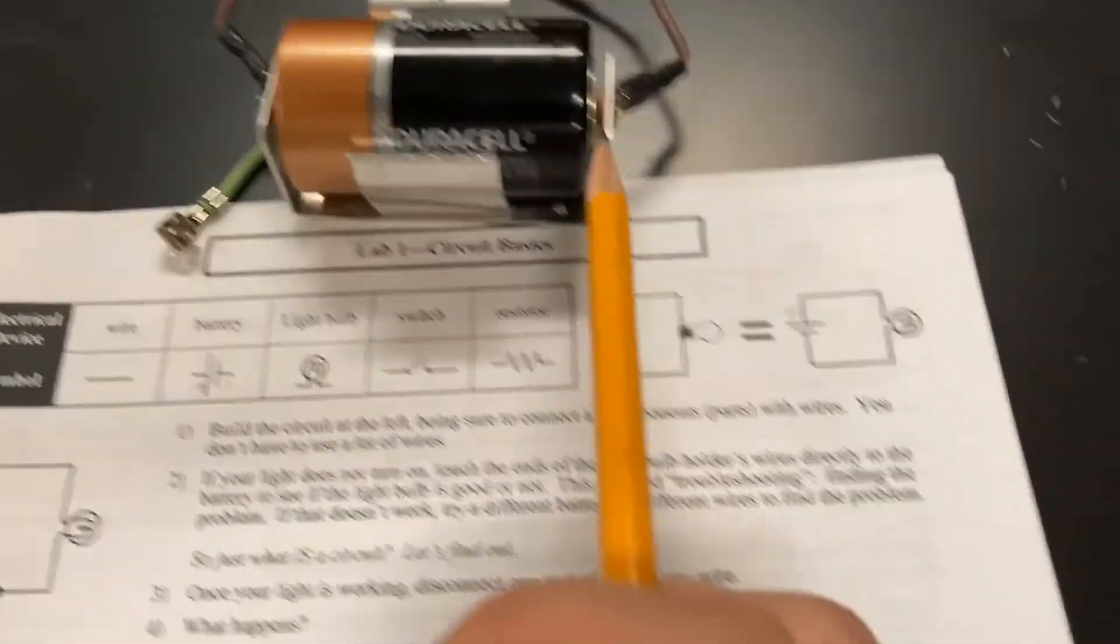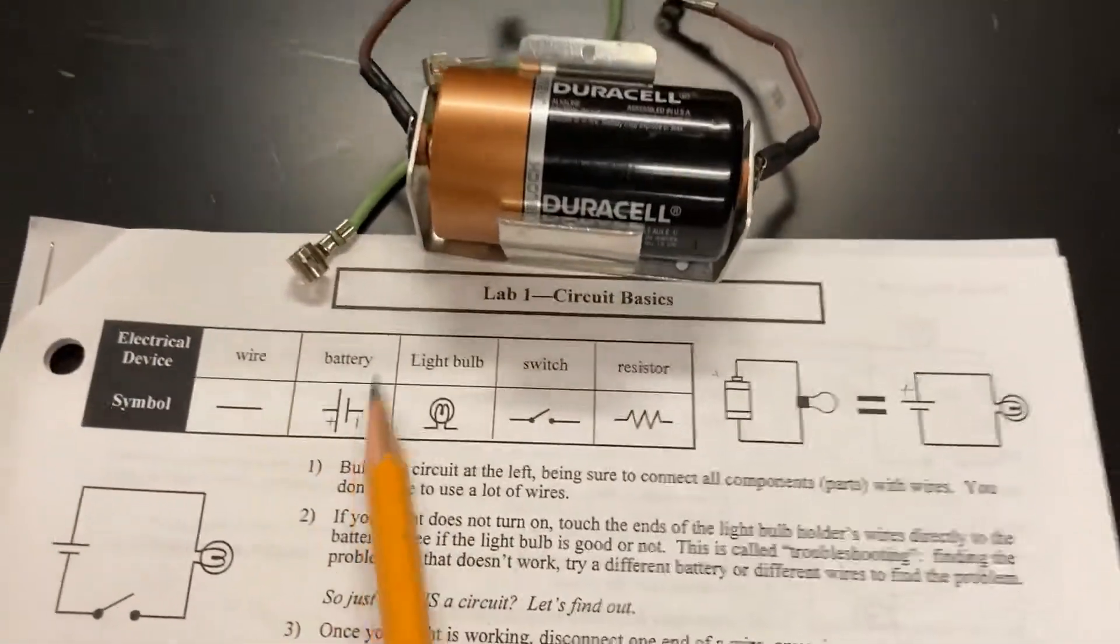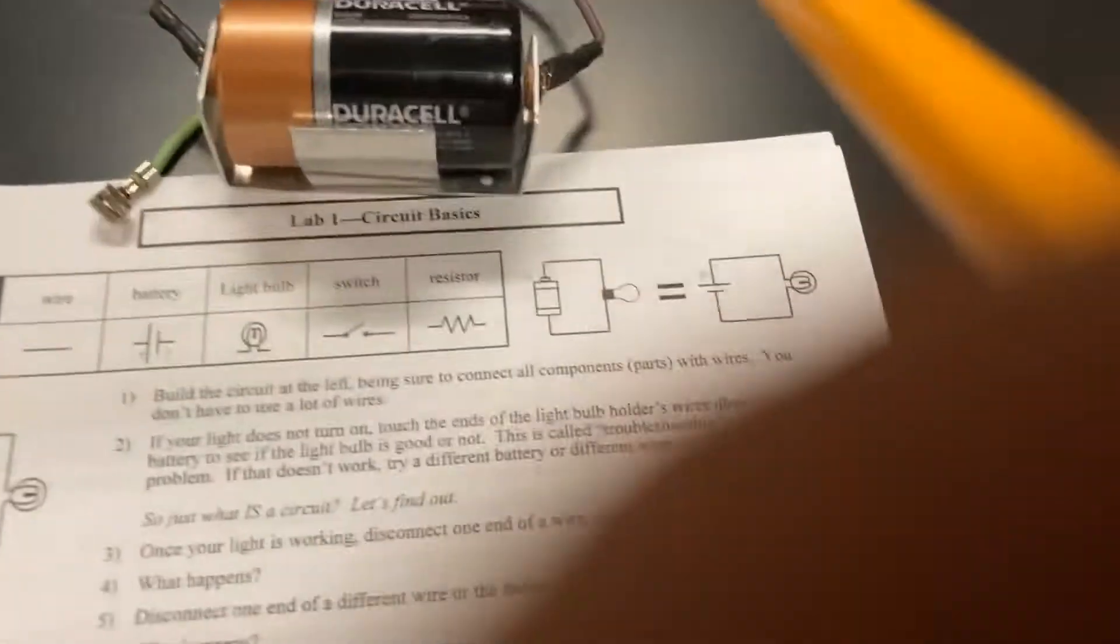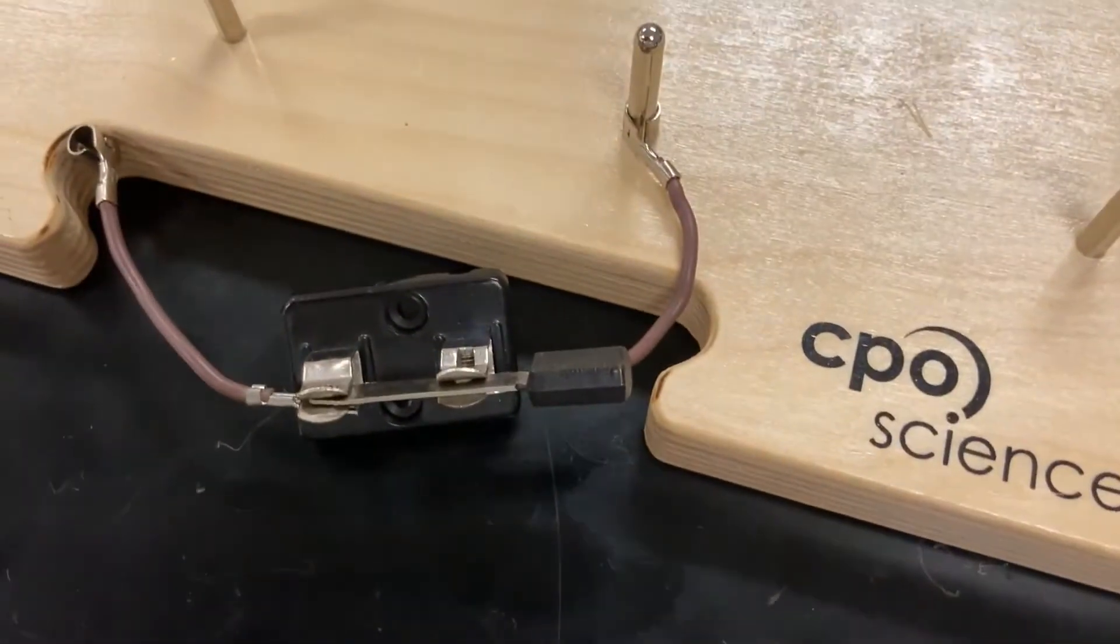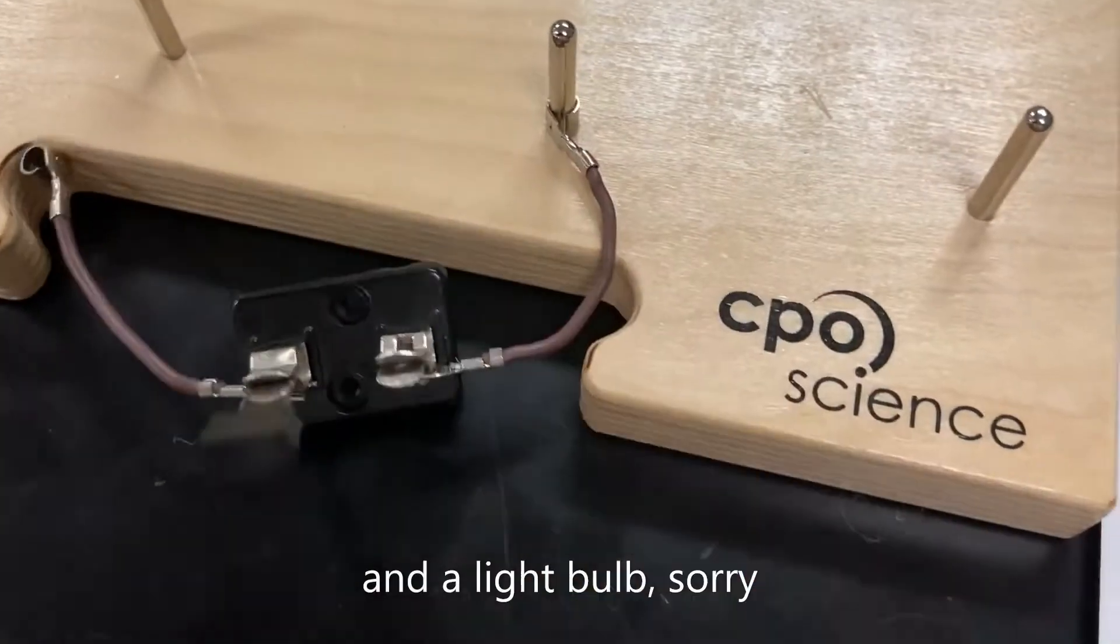This side here, which is not bumpy, is the short end. Positive, negative, positive, negative. We have a switch, which looks like this, okay, goes up and down, simple enough.